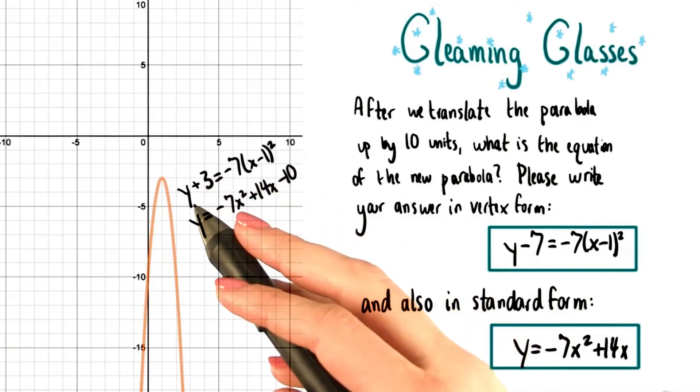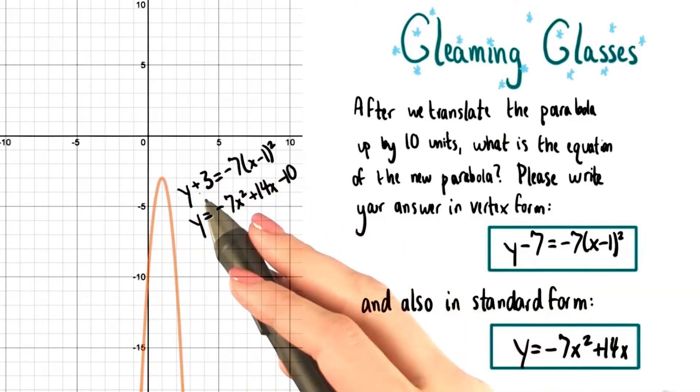The only number that will change is the constant added to y on the left hand side. We need to subtract 10 from here, since we're moving up by 10.